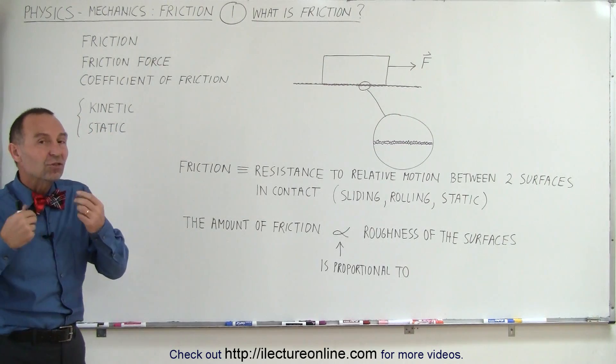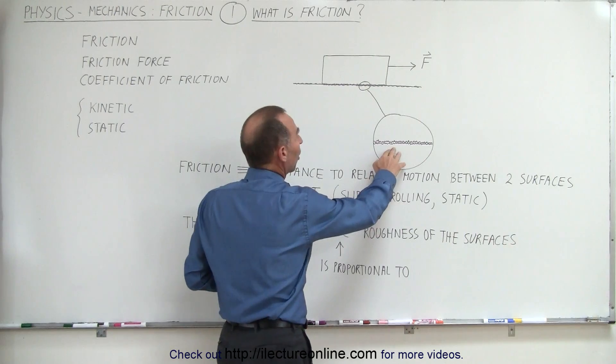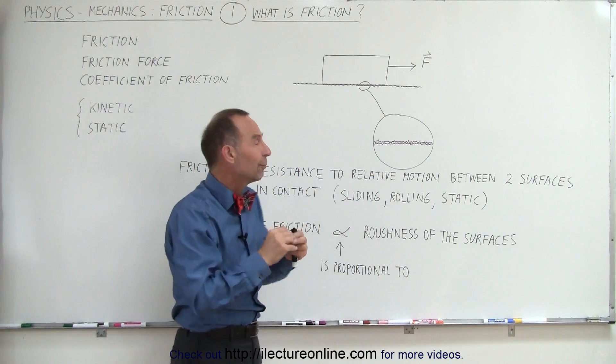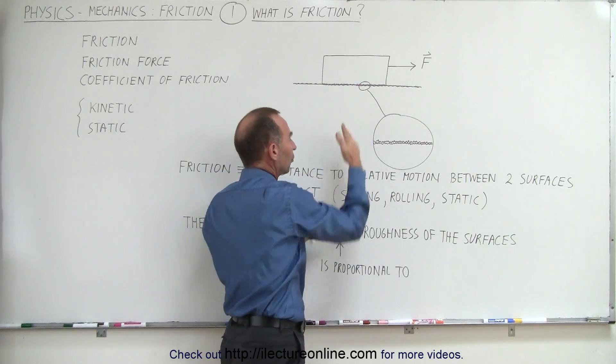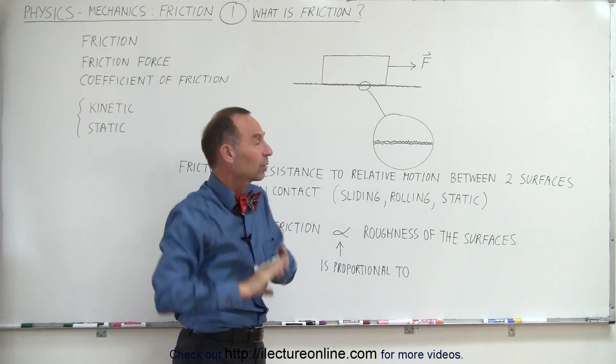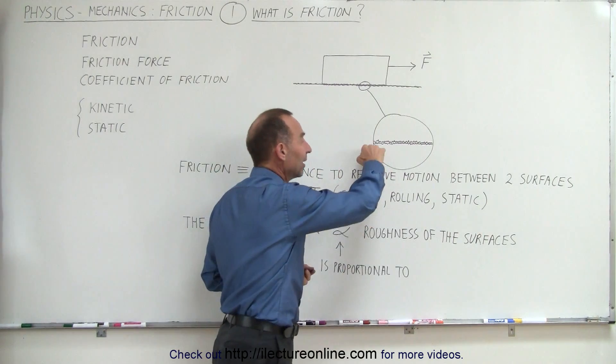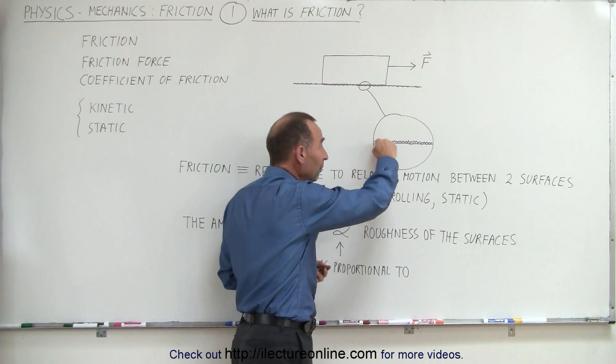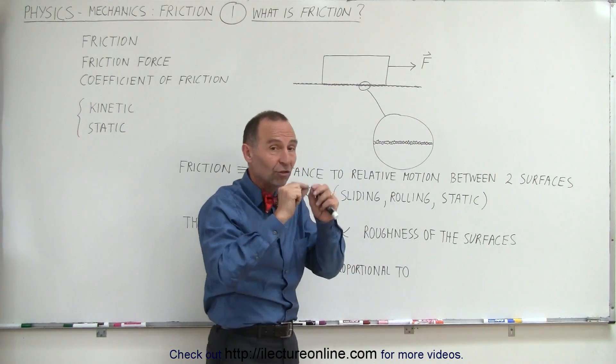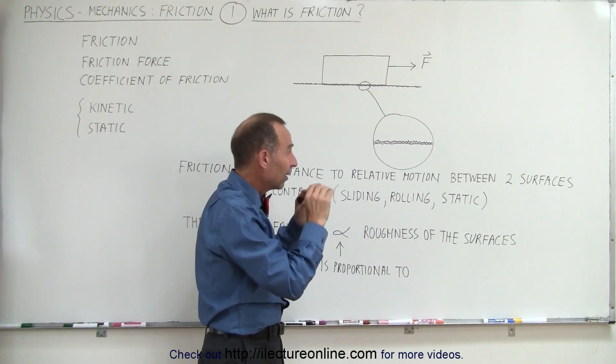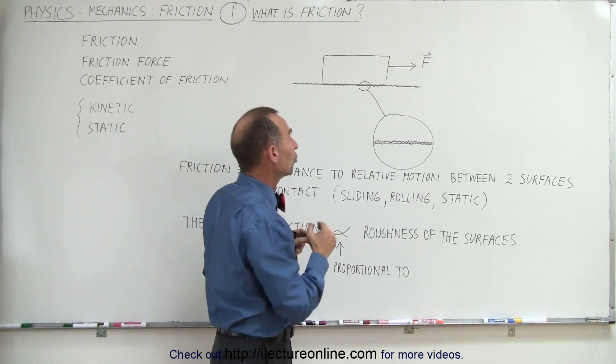Now friction is really caused by the fact that surfaces are not perfectly smooth. If we take a very close look at surfaces of two objects that are in contact with one another, we see under a microscope especially that there's quite a bit of undulation on the surfaces—there's jagged edges, little holes, little extrusions and so forth.